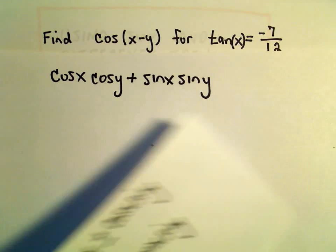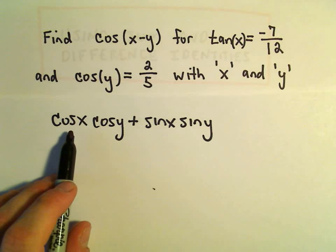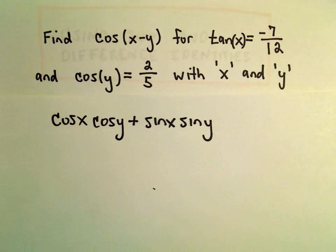We're given at least one of the values—we're given cosine of y—but we don't know cosine x, sine x, or sine y. So we have to figure those out. There are a couple different ways to go about doing these.